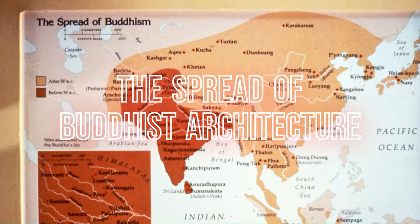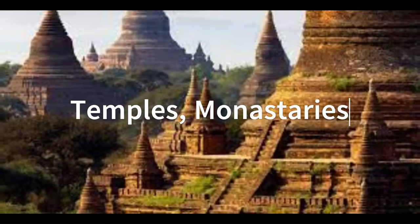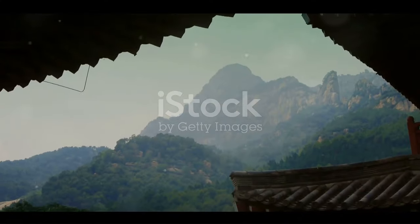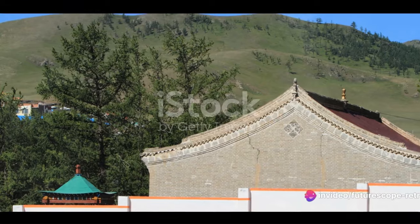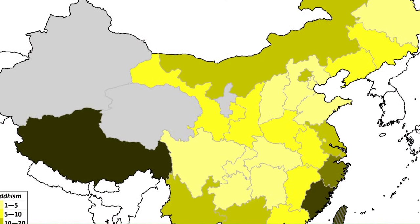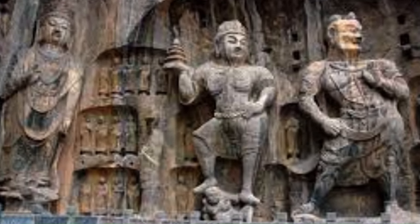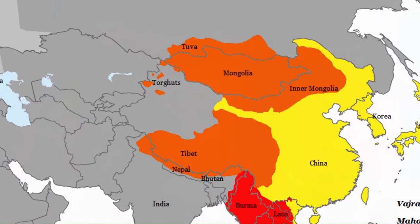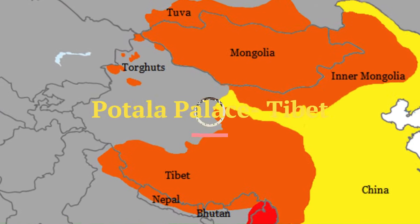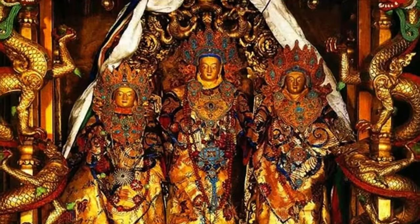Buddhism had a profound impact on architectural styles in East Asia, leaving a lasting legacy of temples, monasteries, and pagodas. In Central Asia, the influence of Buddhism can be observed in structures like the Shuurun Bumbagar Monastery in Mongolia, characterized by its intricate woodwork and sacred relics. China, as a significant center of Buddhist influence, features the renowned Longmen Grottoes, where thousands of Buddhist statues and carvings adorn the cave walls. Tibet's unique Buddhist architectural style is exemplified by the Potala Palace in Lhasa, a massive hillside complex that combines Tibetan, Indian, and Chinese architectural elements.